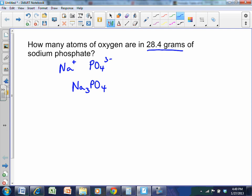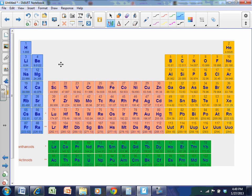I need the molar mass of sodium, phosphorus, and oxygen. So I go to my periodic table, and I see that sodium has a molar mass of 22.99, phosphorus 30.97, and oxygen 16.00.